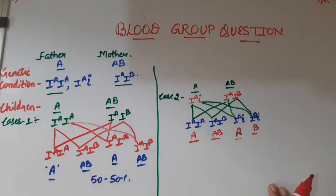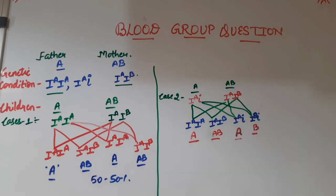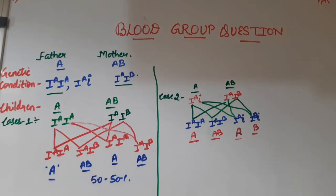So this is the example where we saw father having blood group A and mother having blood group AB, and all the possibilities in the children. In the next example, we are going to see a cross where father belongs to blood group B and AB, and what possibilities arise in that case. Stay tuned, and if you're liking the video, do like it, share, subscribe to my channel — thank you for watching.